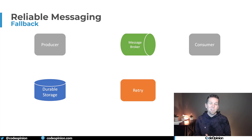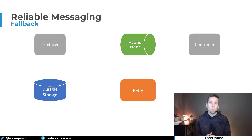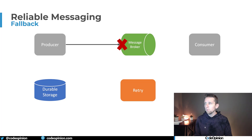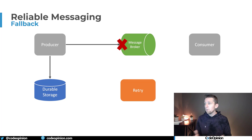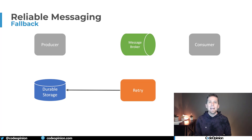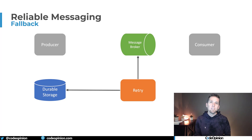One solution to this problem is about availability - having some kind of resilience and fallback in case we can't publish our message to the broker. In the video I did about McDonald's and their EDA process, this is actually what they do. When the producer can't connect or publish to the broker, there's a fallback where that message gets pushed to durable storage. In McDonald's' case, they were using DynamoDB, serializing the message there. Then they had a retry mechanism - an AWS Lambda - that fetched messages out of DynamoDB and tried to publish them to the broker.